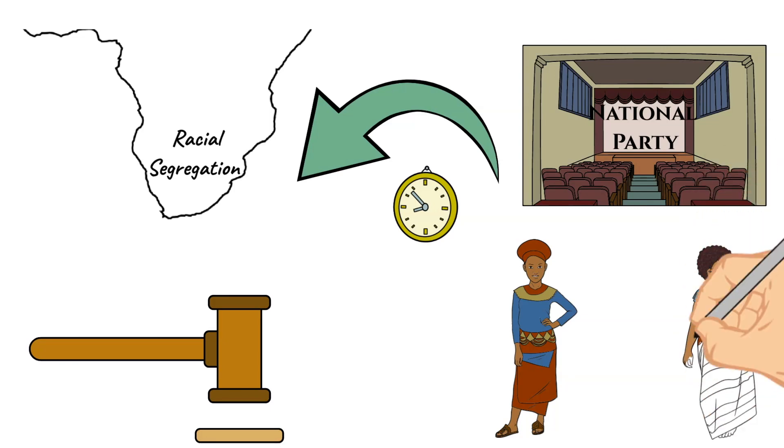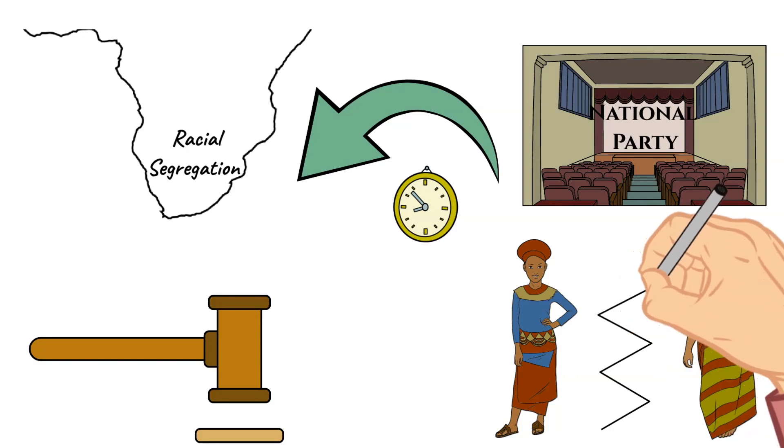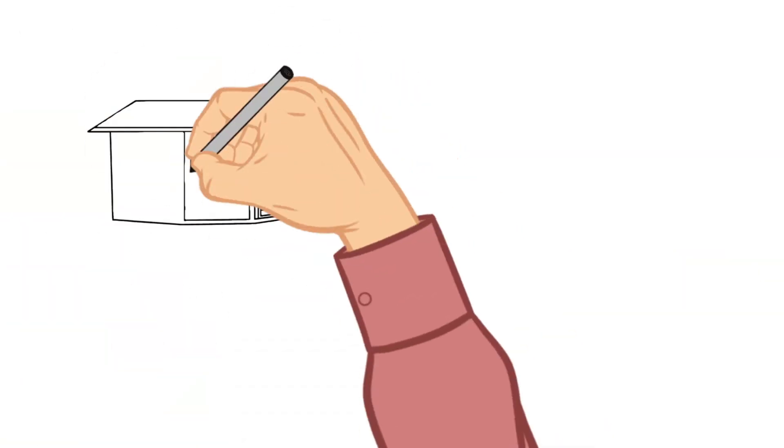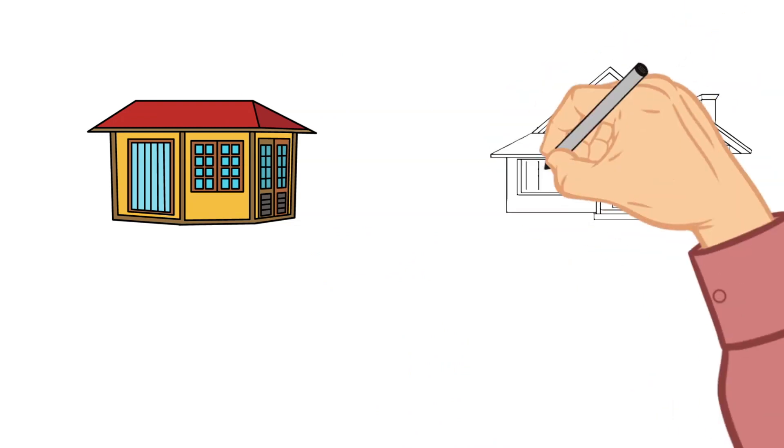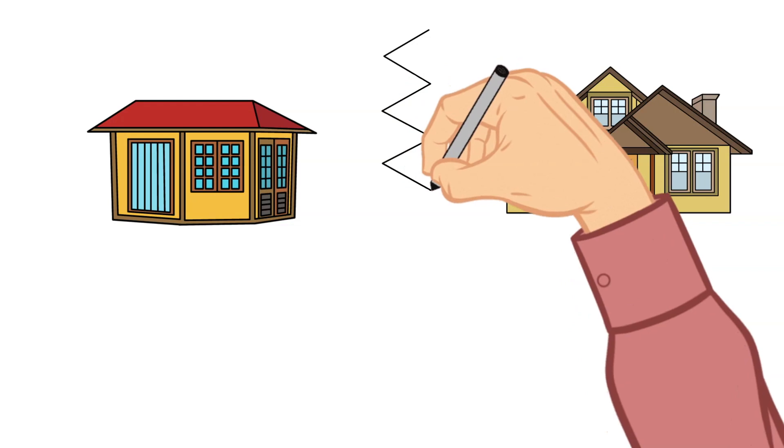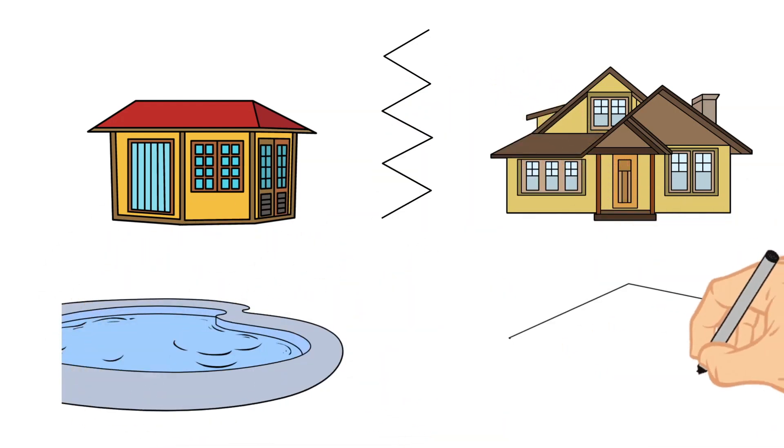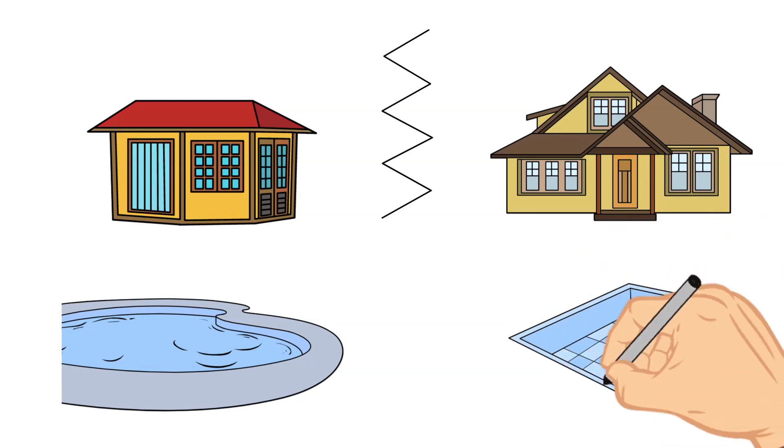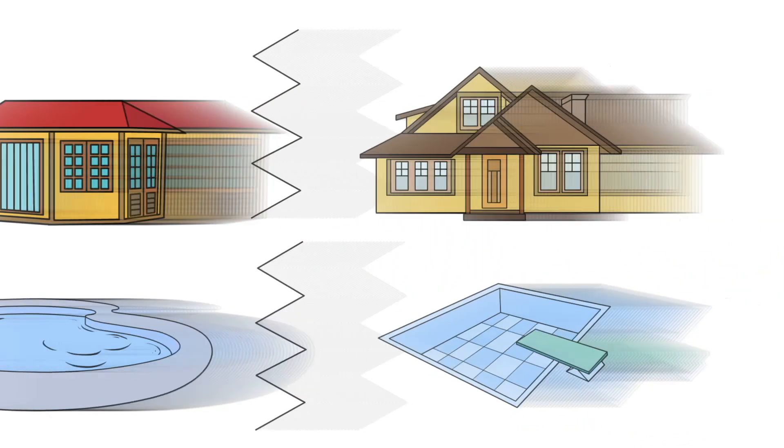Under apartheid, non-white South Africans were forced to live in separate areas from whites and use separate public facilities. Even contact in everyday life was limited between the two groups.